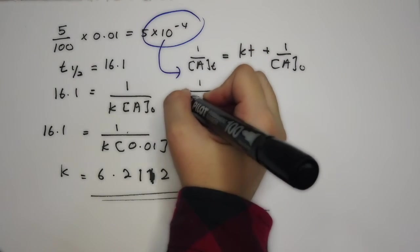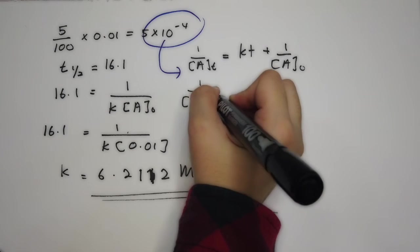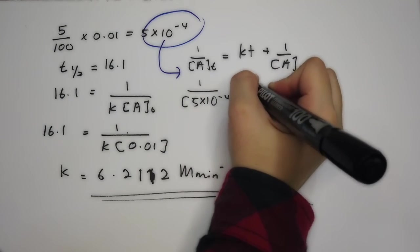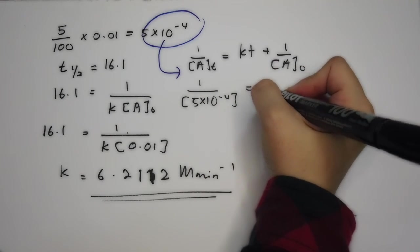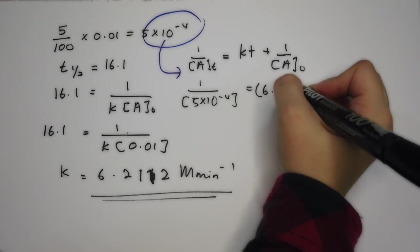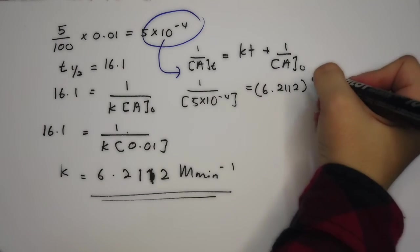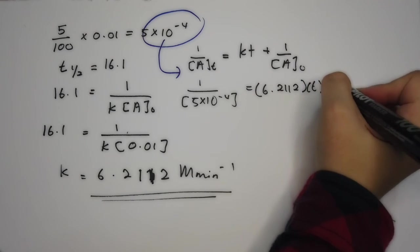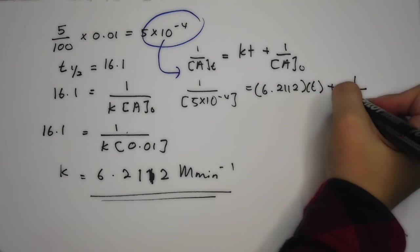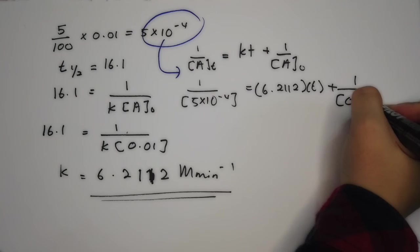So 1 over 5 times 10 to the power of negative 4 is equivalent to K. K is 6.2112 times T, which is the thing you want to calculate, plus 1 over A-naught, which is 0.01.